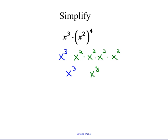I started with x cubed, so the final answer is x to the eleventh. The x to the eighth comes from multiplying 2 times 4 — it is not the same as taking 2 to the fourth power. I multiply my powers. Because I'm doing x squared basically four times, and then you add those powers.